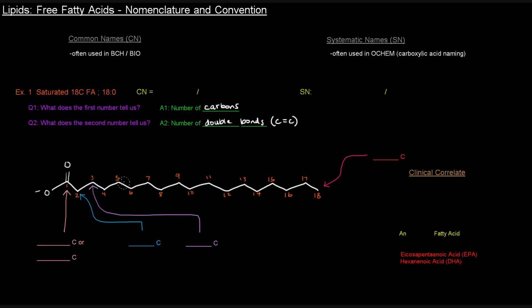This 18-carbon saturated fatty acid has a name. Its common name is stearic acid or stearate. Now, which of these is actually correct? They're both correct, but the actual name depends on protonation state. Because it's deprotonated, it's not actually an acid anymore — it's the conjugate base. So stearic acid refers to the carbonyl group being protonated, and stearate is what I've drawn because it is deprotonated.